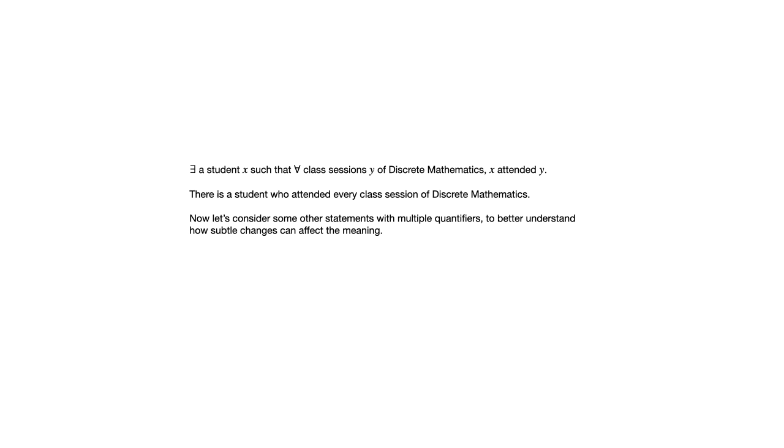Now let's consider some other statements with multiple quantifiers to better understand how subtle changes can affect the meaning. We're going to keep the same subject matter but move some things around. So: for all students X, there exists a class session Y of discrete mathematics such that X attended Y. What this is saying — we start with the universal quantifier, so we're saying something about all students. For all students X, there exists a class session Y of discrete mathematics such that X attended Y.